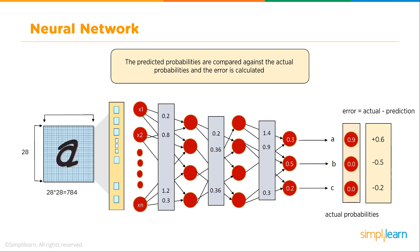The error is simply the actual minus predicted. You can see here where we know it's not C, so it's minus 0.2. We know it's not B, so it's minus 0.5. But we do know that it is an A, so we adjust that by 0.6.